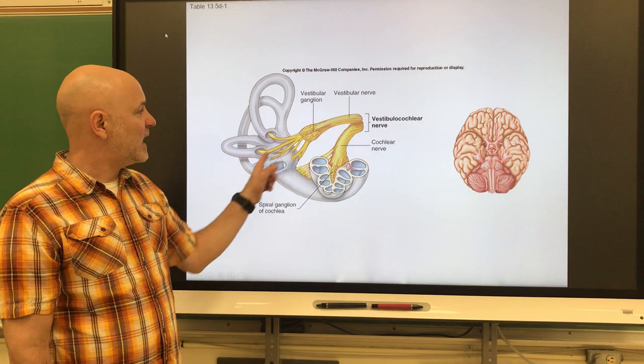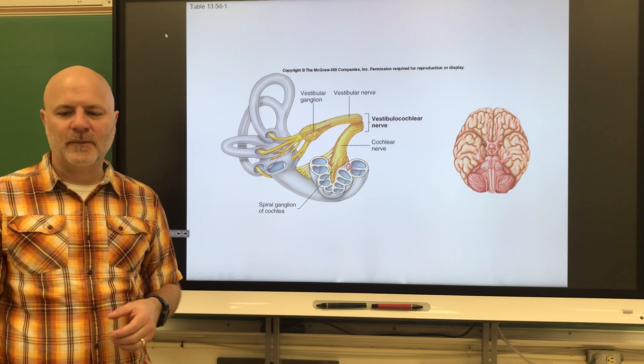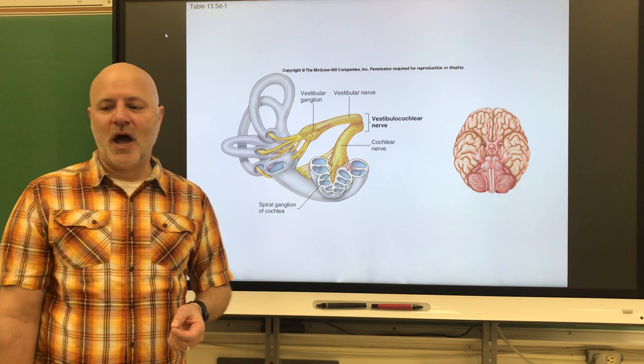Next is the vestibulocochlear nerve. You can see where it arises from. It's named this because it goes to the vestibule and the cochlea, both parts of the inner ear. It is sensory for equilibrium, which we get from the vestibule, and also for hearing, which we get from the cochlea.